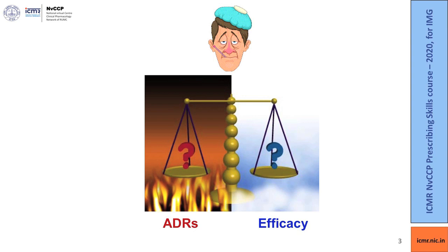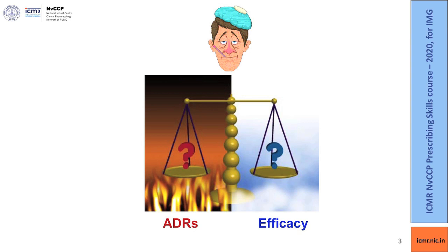We have learnt in the earlier modules 1 and 2 that prescribing medicines requires a fine balance between understanding and judging the efficacy of a medicine against the possible adverse drug reactions it can cause. We have also learnt that adverse drug reactions account for hospital consultations and admissions and contribute to significant morbidity and mortality in patients.